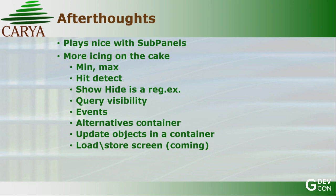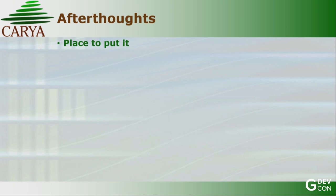There's much more icing on the cake: the min/max we already saw, hit detection, and the show/hide is not just a string but uses a regular expression - so you can show all objects that have a '1', '2', a number, or whatever pattern. You can query visibility, there are events that signal when scaling is done, there's a container that switches between array elements for switching between views A, B, or C, and an event to update the objects in a container. Coming soon: loading and storing of screen settings - saving all sizes and visibility and reloading them.